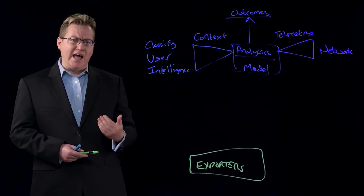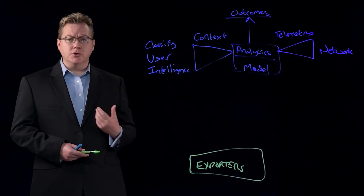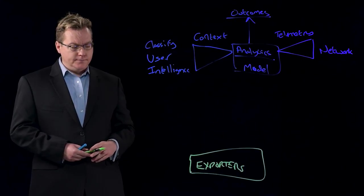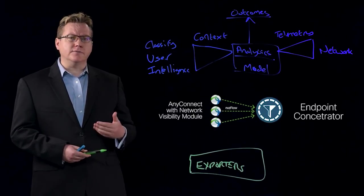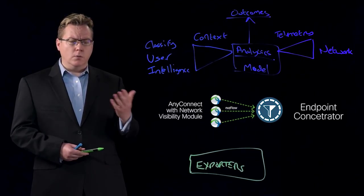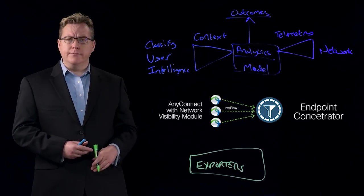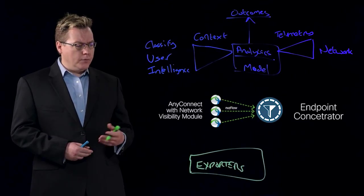And that really allows us to take that span port information and convert it into the telemetry that we need in our data model. It also takes the form of the endpoint. For those users who are not on-premise, who are on the AnyConnect VPN client, we have the ability to export information from those.